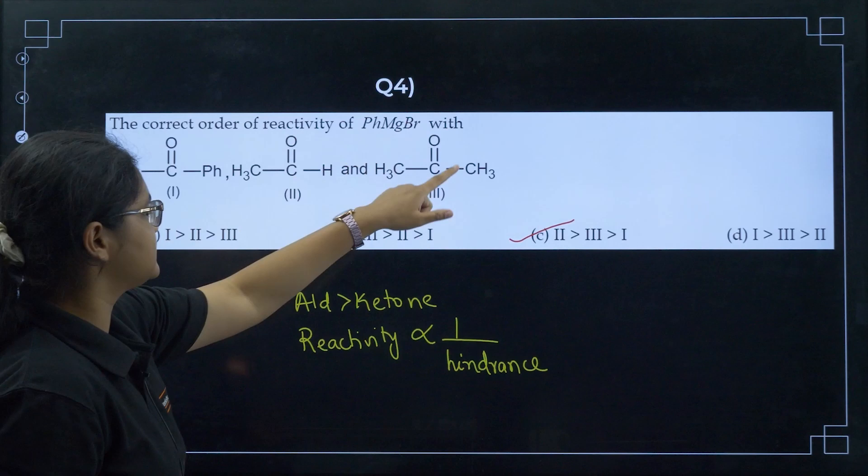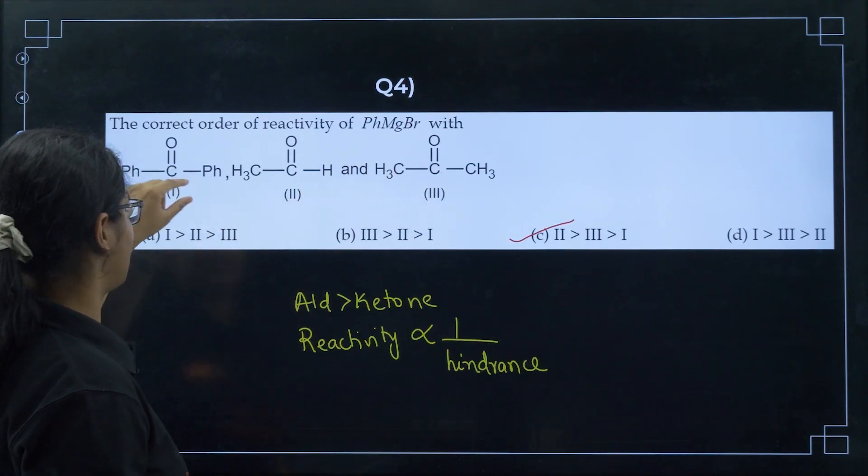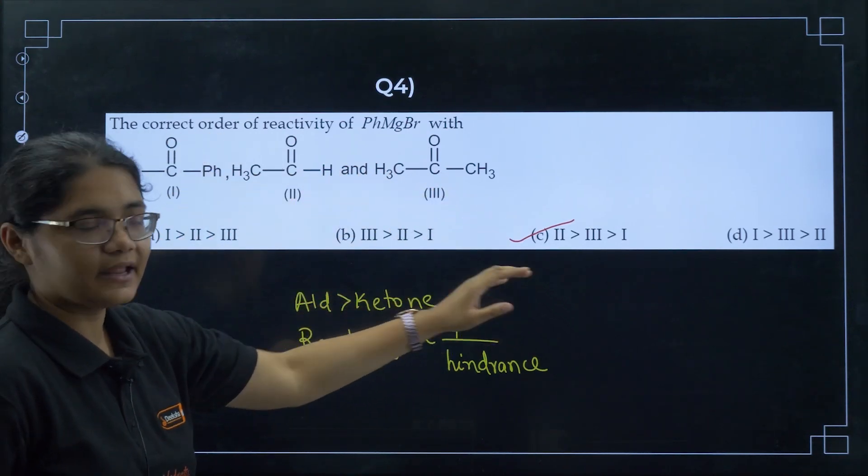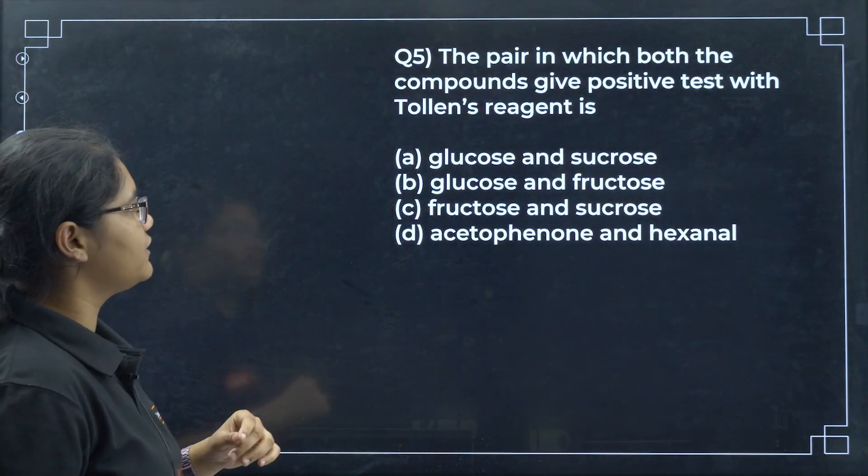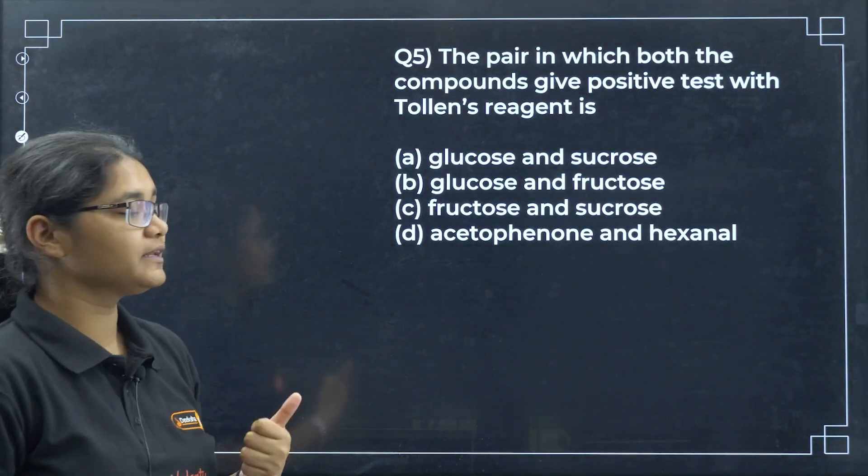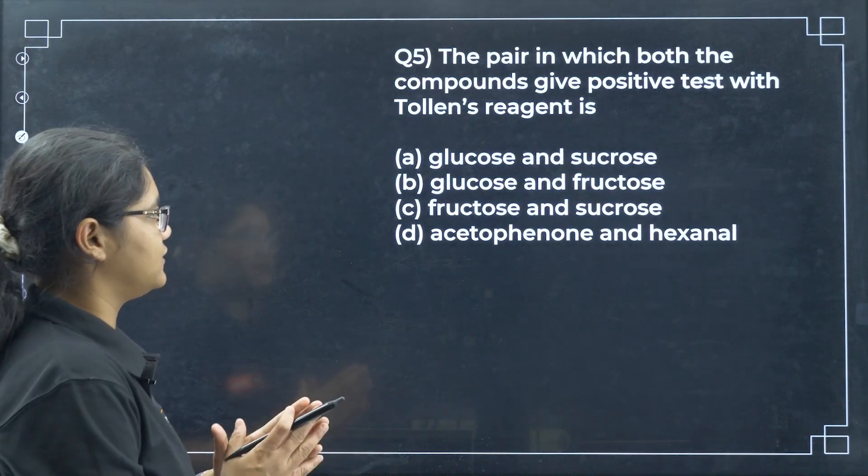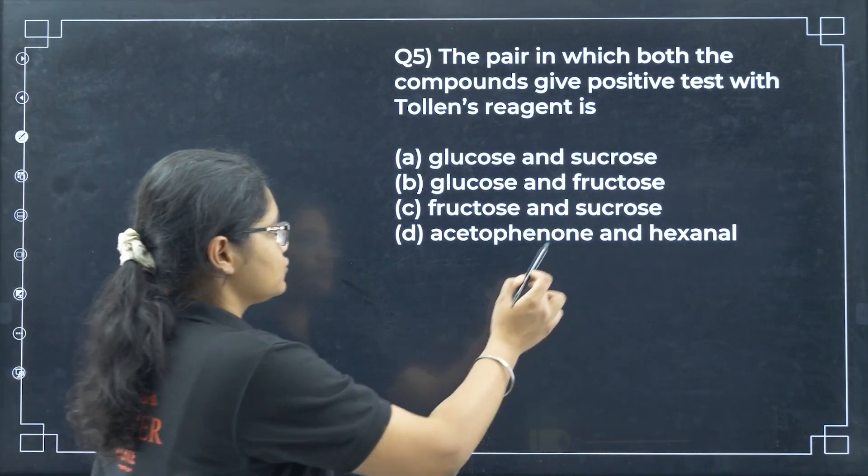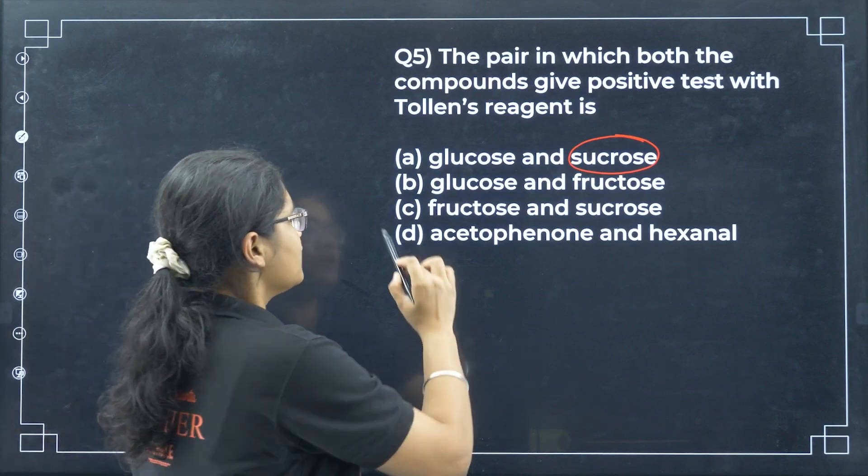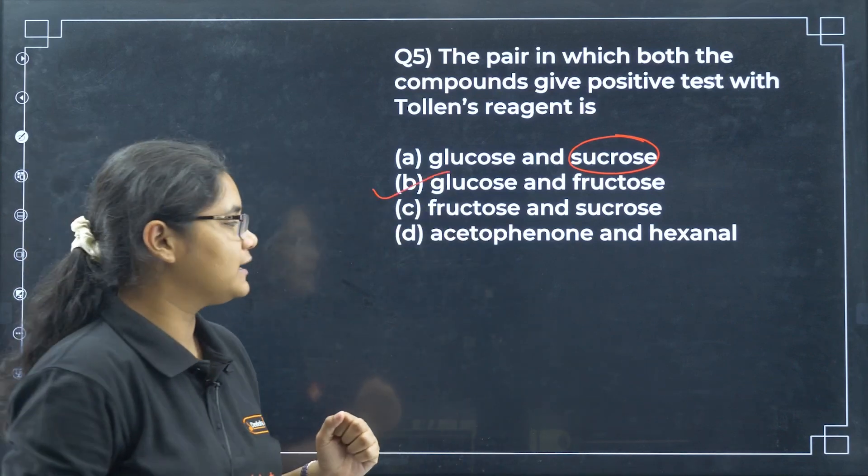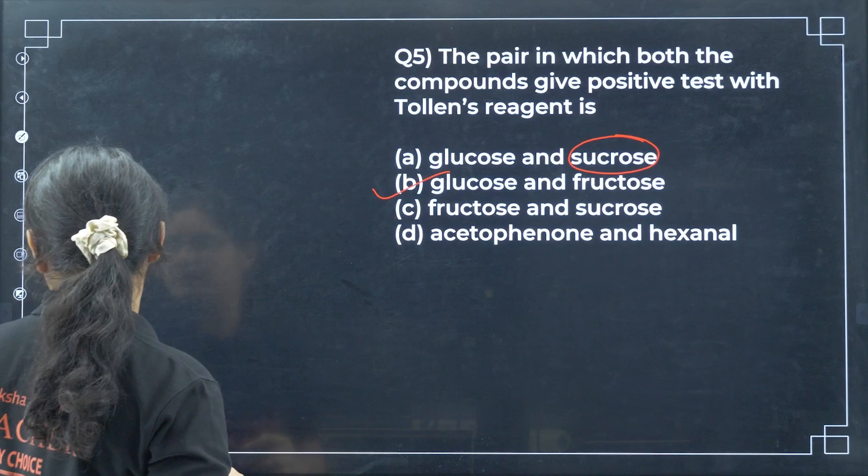If hindrance is more, reactivity will be less. First of all, this is your aldehyde, so compound 2 will be more reactive. I have only one option with that, so definitely option C. But after 2, you can see here I have ketone group and here I have more bulkier groups. So 2, 3, then 1.